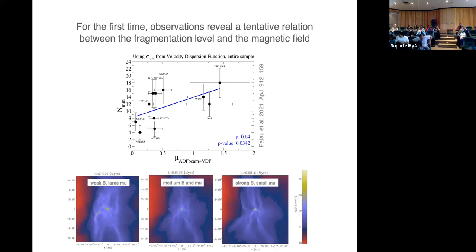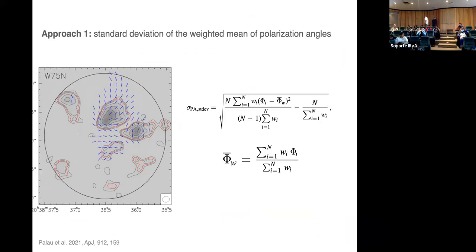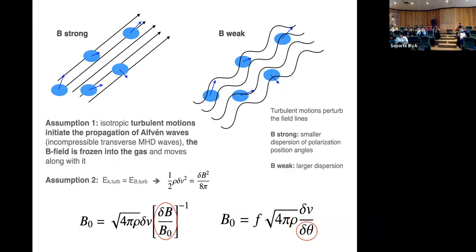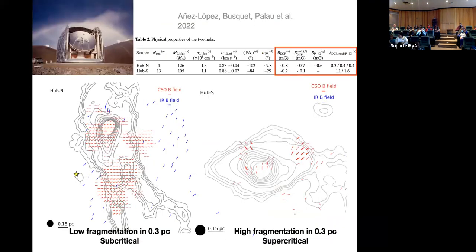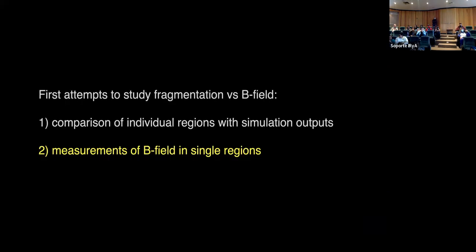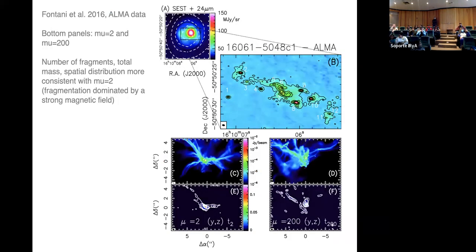Enrique preguntó sobre la consistencia con simulaciones mencionada anteriormente: la consistencia se refiere al número de fragmentos, la separación entre fragmentos y el cociente de masa en fragmentos respecto a la masa del núcleo denso, que equivale a una especie de eficiencia de formación estelar, todo ello en cuanto a la fragmentación observada, sin mediciones de campo magnético en esa comparación. El moderador agradeció a la ponente y cerró la sesión.